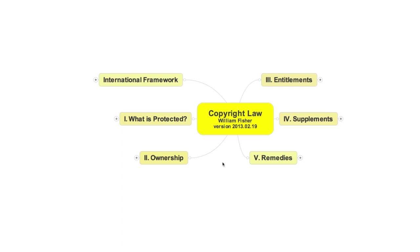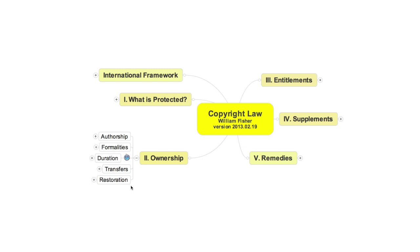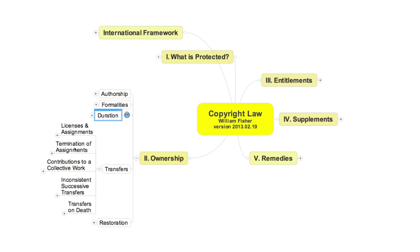The machinery of the copyright system is intricate, surprisingly so. I will not attempt today to catalog all of its details. Instead, I will concentrate on three important dimensions of this machine. First, the roles played by formalities. Second, the rules governing how long copyrights last. And third, the aspects of the system that attempt to protect vulnerable artists and their families from exploitation.